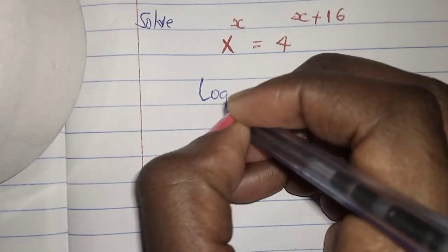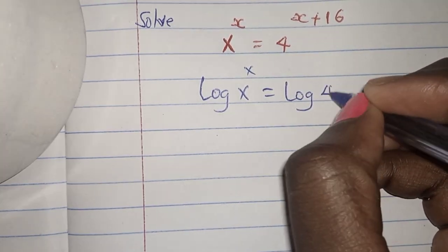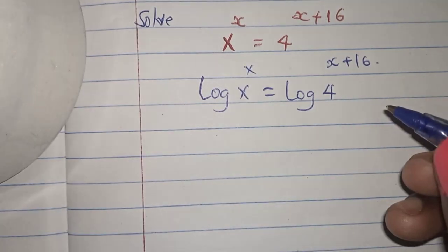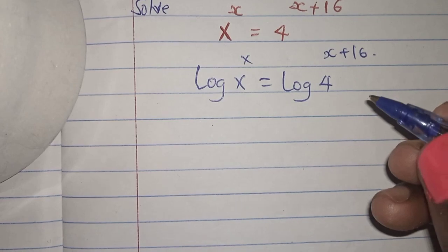So it will be log x to the power of x is equals to log 4 to the power of x plus 16. I've introduced logs on both sides because my bases are not the same.